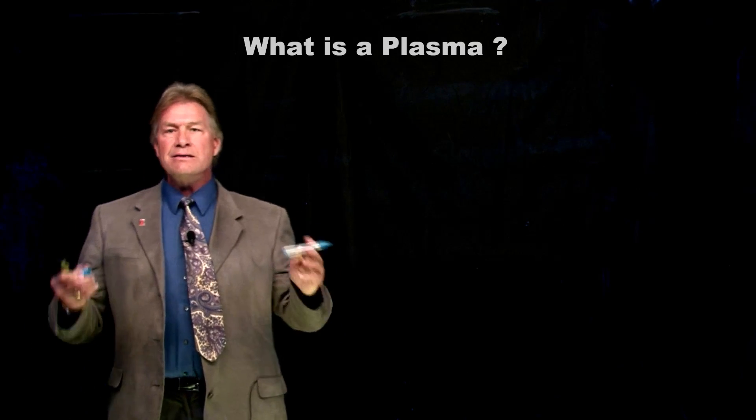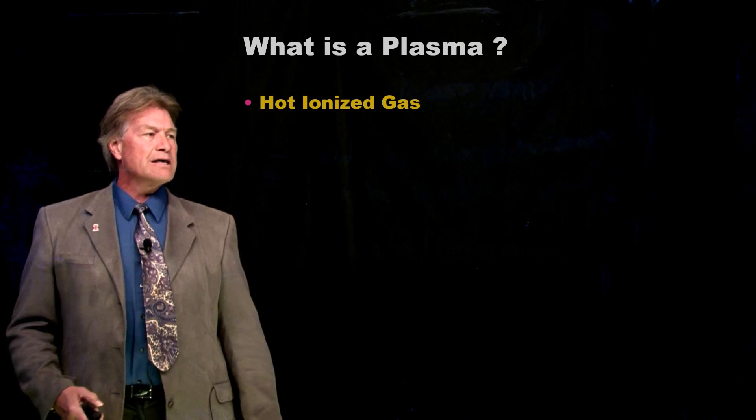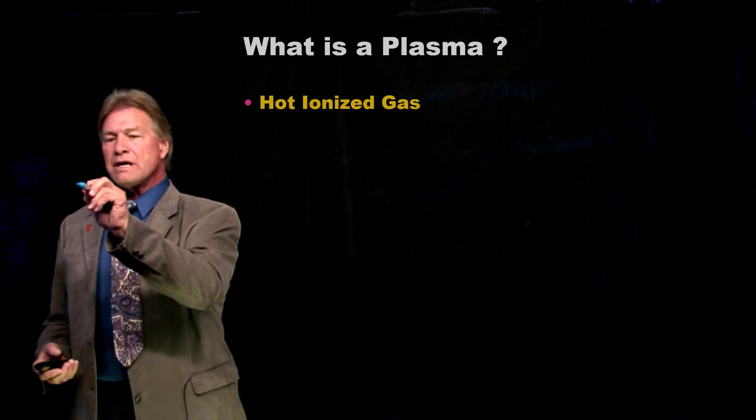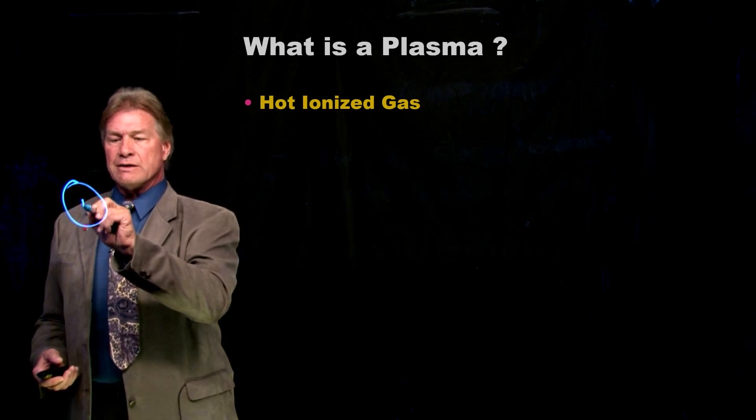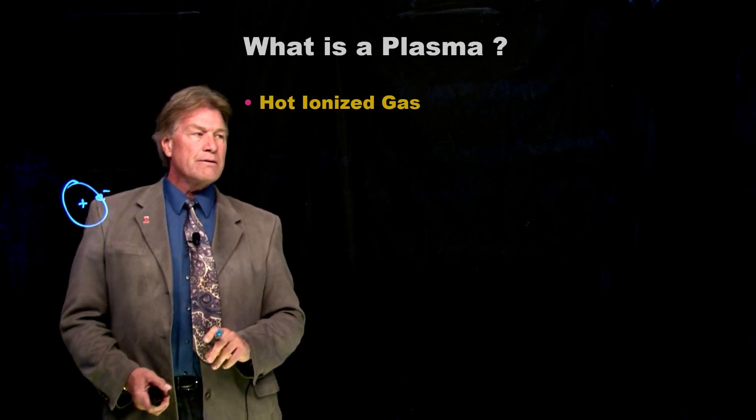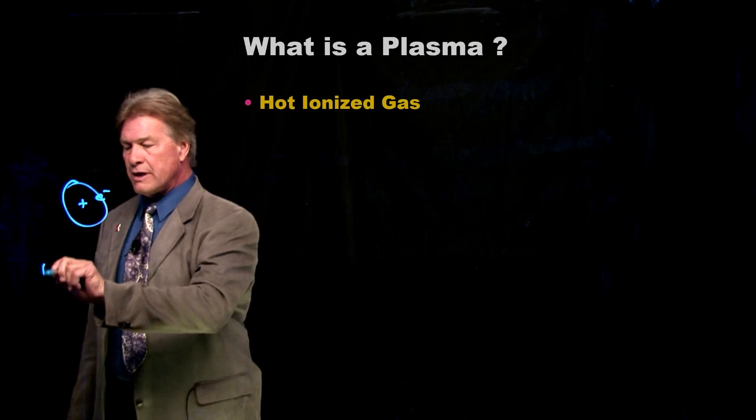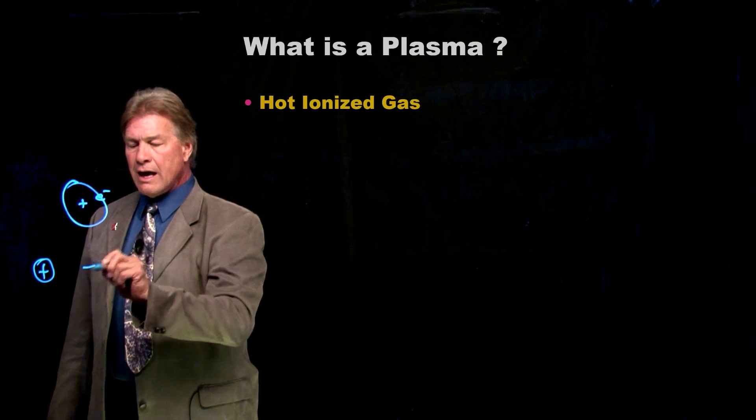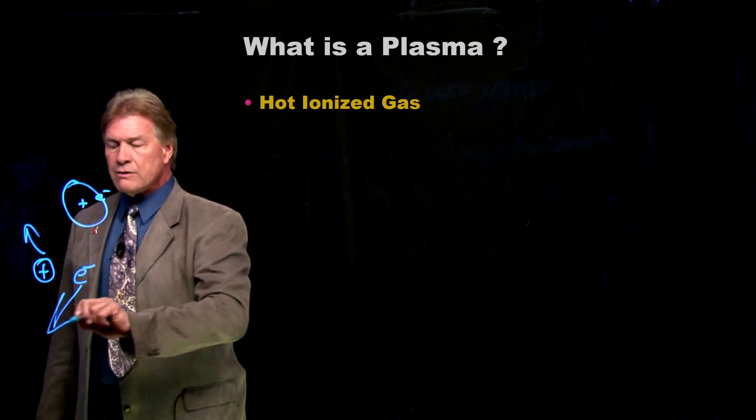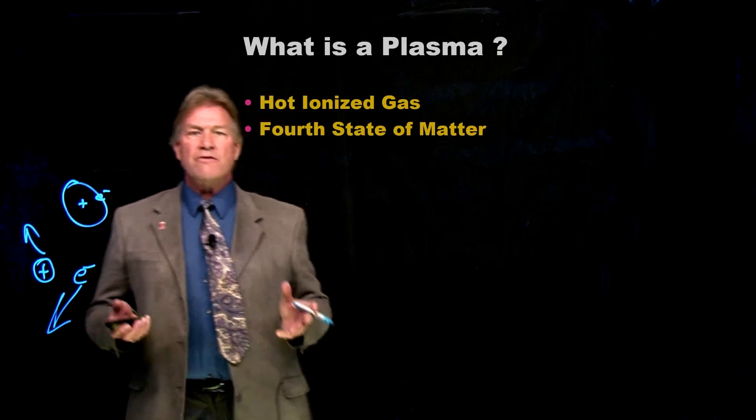And so, I need to tell you what a plasma is. A plasma is a hot ionized gas. So, let's say we have a gas molecule. And it has a nucleus and it has electrons going around it. An ionized gas is where I put enough energy into this so that I have just the ion and I have just the electron. And they are free to move about. This is the fourth state of matter.